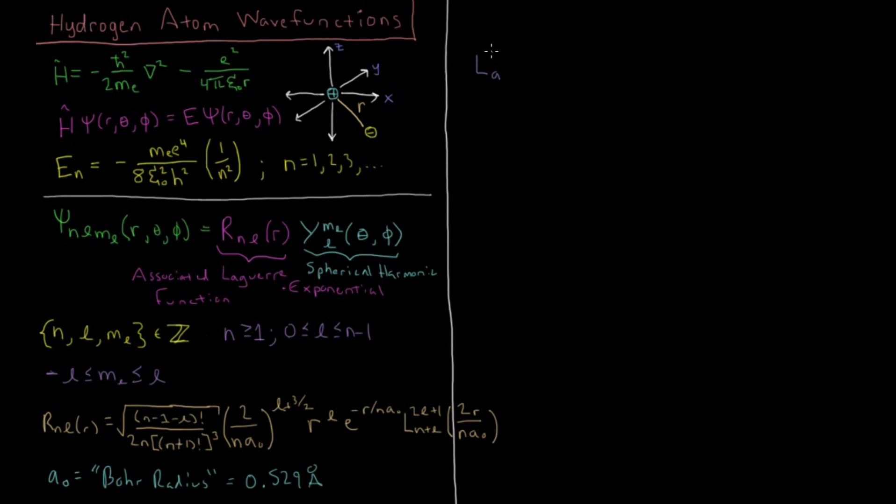Just to note that this l of a, b of x, where a is n plus l, b is 2l plus 1, and our x is 2r over n a naught, that was our associated Laguerre functions for a given value of a and b.